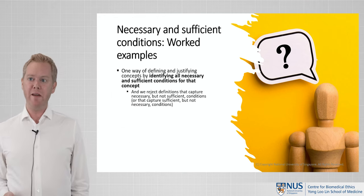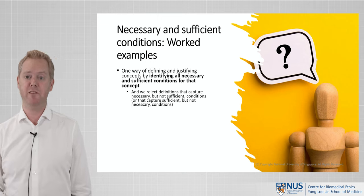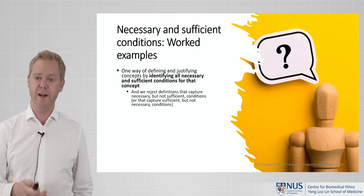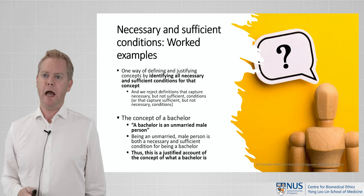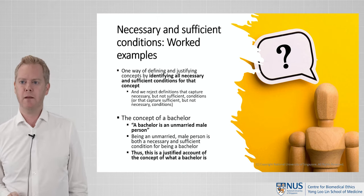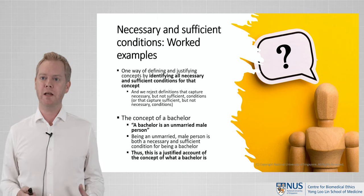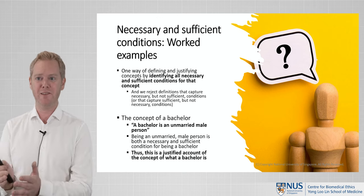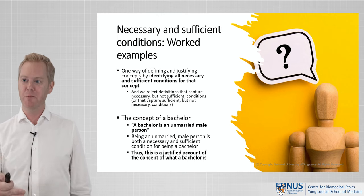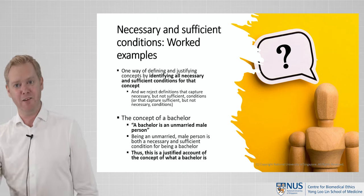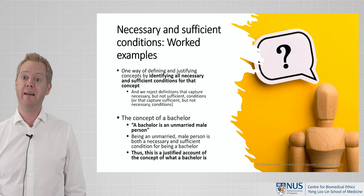One way of defining and justifying a concept is to identify both the necessary and sufficient conditions and rejecting definitions that only specify one but not the other. The concept of a bachelor is commonly defined as an unmarried male person. That is an unproblematic definition because being unmarried, male, and a person is both a necessary and sufficient condition for being a bachelor. You can't be a bachelor if you're not an unmarried male person, and there is nobody else who would count as a bachelor.